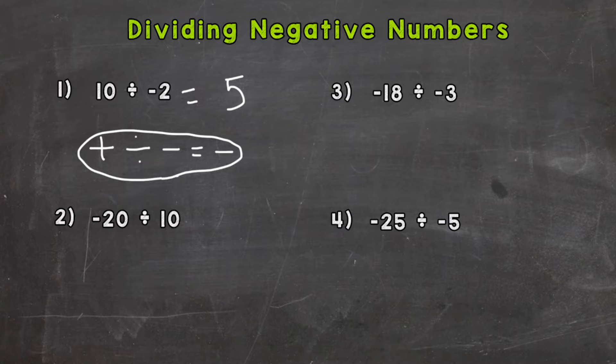So this is actually negative 5 because we have a positive divided by a negative. Again, 10 divided by negative 2 gives us negative 5.